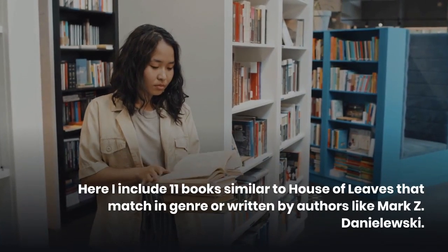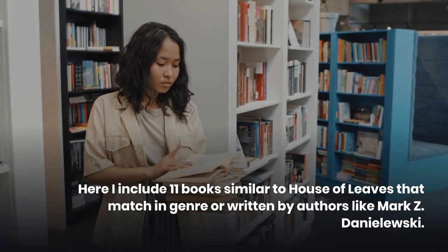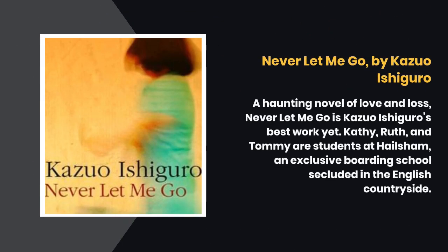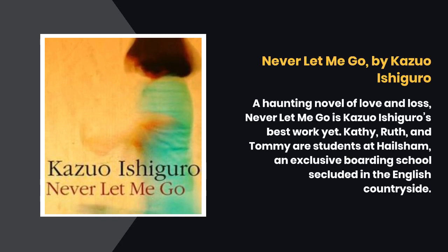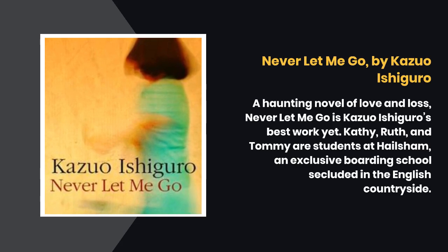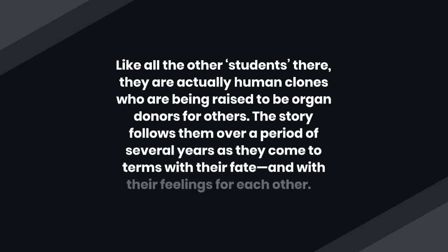Here are 11 books similar to House of Leaves that match in genre or are written by authors like Mark Z. Danielewski. Never Let Me Go by Kazuo Ishiguro — a haunting novel of love and loss. Kathy, Ruth, and Tommy are students at Hailsham, an exclusive boarding school secluded in the English countryside. Like all the other students there, they are actually human clones being raised to be organ donors. The story follows them over several years as they come to terms with their fate and with their feelings for each other.